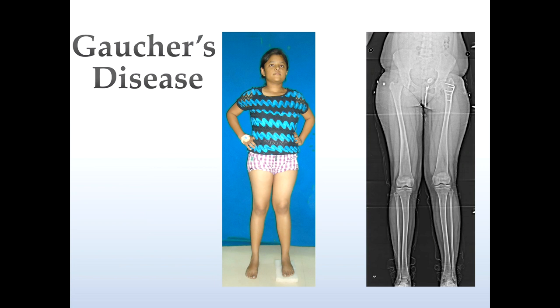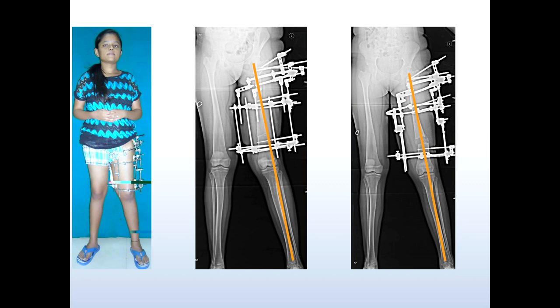Here is a young lady with Gaucher's disease — she's on a special enzyme preparation imported for her specially every month. This osteotomy was done for her. She's short, she's got coxa vara and a very high riding trochanter. Her father was insistent I do everything perfectly — millimeter perfect and degree perfect — so I said the Ilizarov tool is there for us.